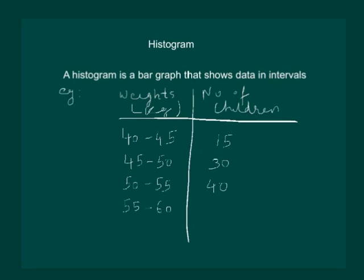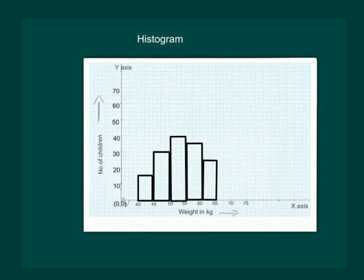And children weighing from 60 to 65 kg are 25. To draw a histogram, let us start by taking a graph paper and plot x-axis and y-axis.